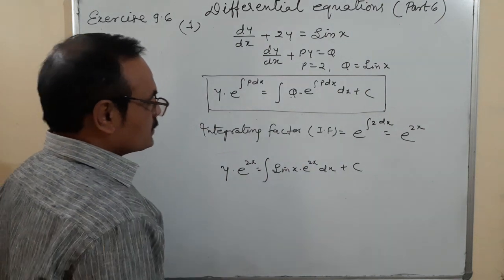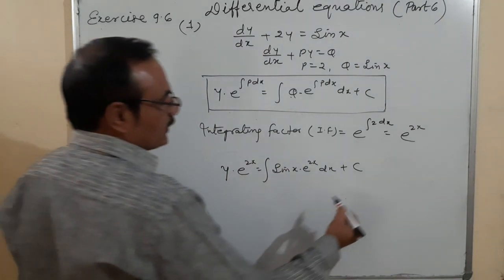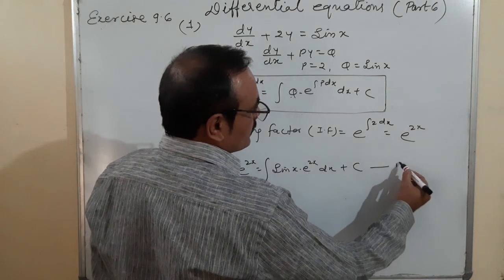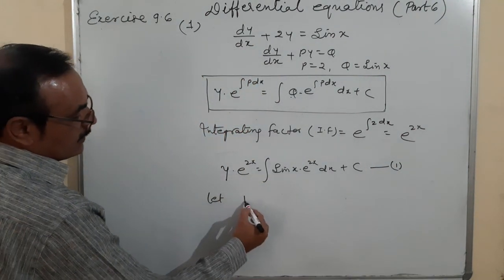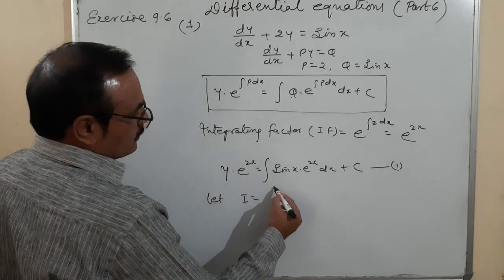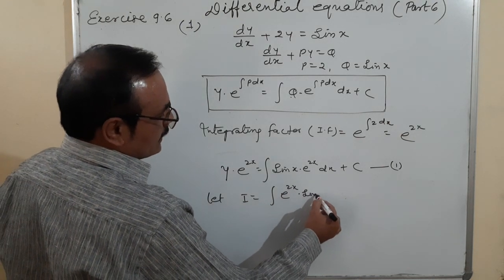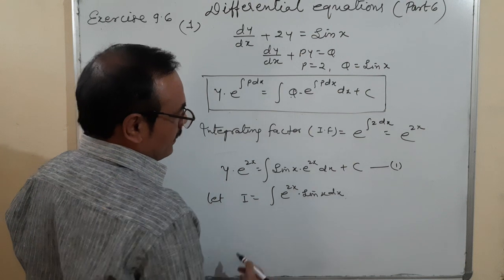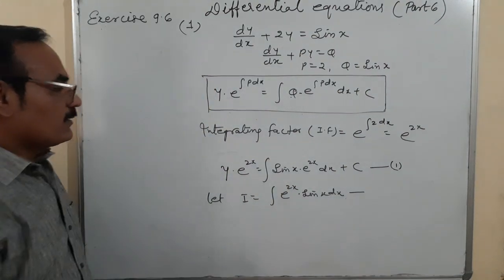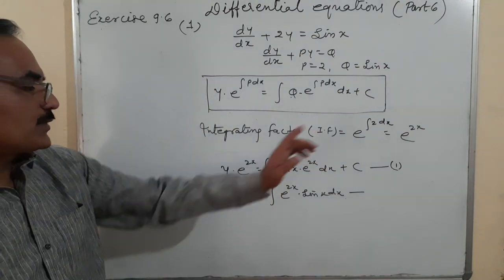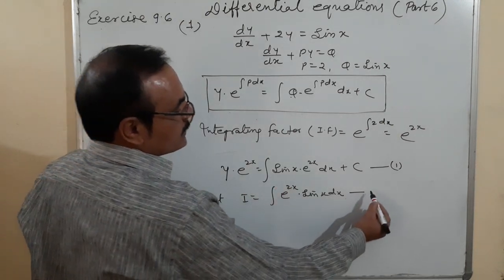Putting the value: y·e^(2x) = ∫sin x·e^(2x) dx + C. Let I = ∫e^(2x)·sin x dx. Using integration by parts with e^(2x) as the first function and sin x as the second.